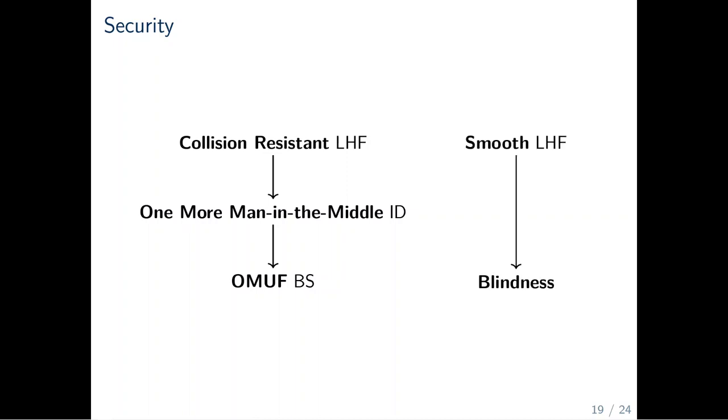We formulate the following security statements. If a linear hash function is collision resistant, then the first transformation yields a one more man-in-the-middle secure identification scheme, where the latter security notion is an intermediate notion natural to linear identification schemes. Further, if a linear identification scheme fulfills this notion, then the second transformation yields an OMUF secure blind signature scheme. Additionally, if a linear hash function is smooth, then the resulting blind signature scheme is blind.